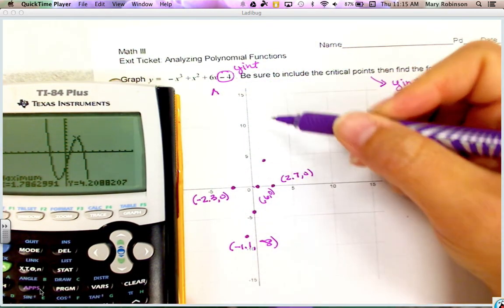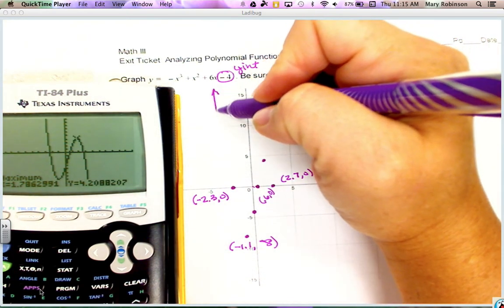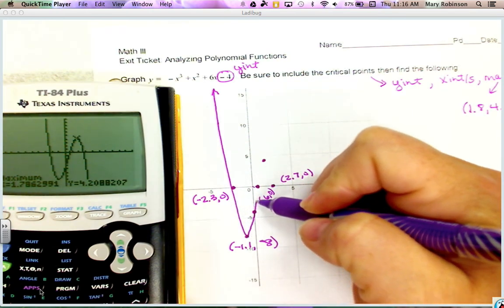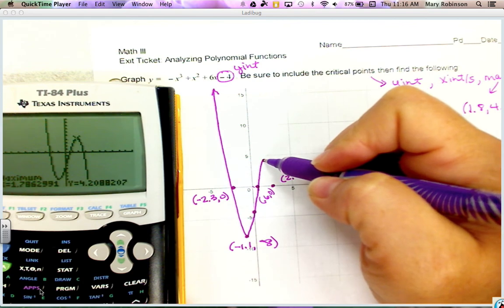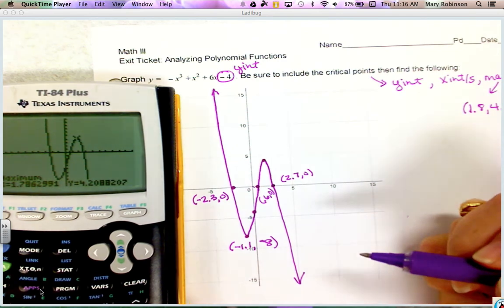I always want you to extend your graph to the edge of the paper. We're going to start up here, I come down here to my minimum, back up through my y-intercept, through my zero. I curve - there's a turning point here at my maximum, go back down through my zero and continue and extend to the end of the graph. I've now graphed my cubic function.